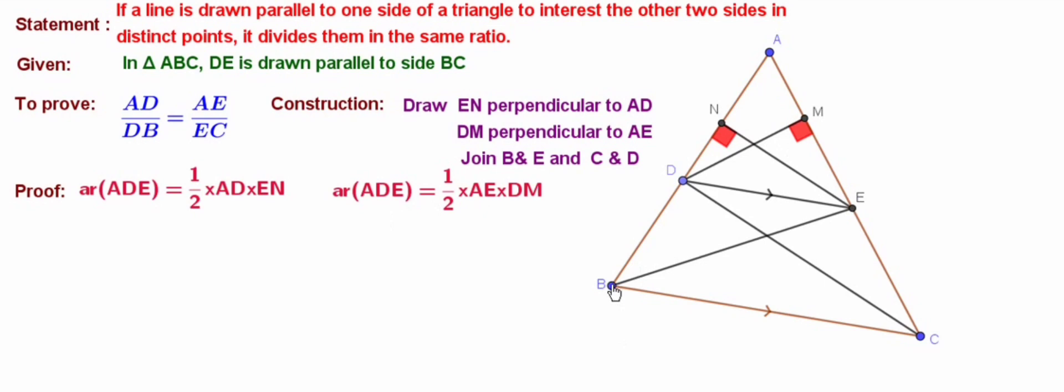Now area of triangle BDE, for which it is an obtuse angle triangle and its altitude is lying outside or in the exterior of the triangle. It is nothing but EN. So half BD into EN for that. Similarly, for triangle ECD, DM is the altitude, EC is the base.